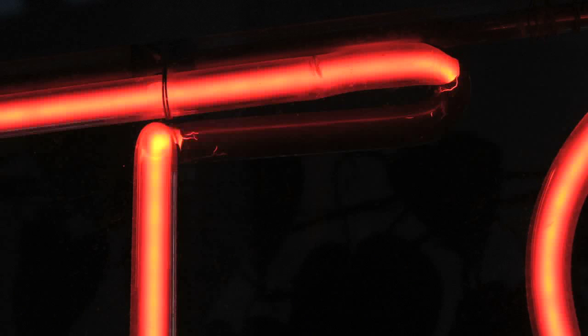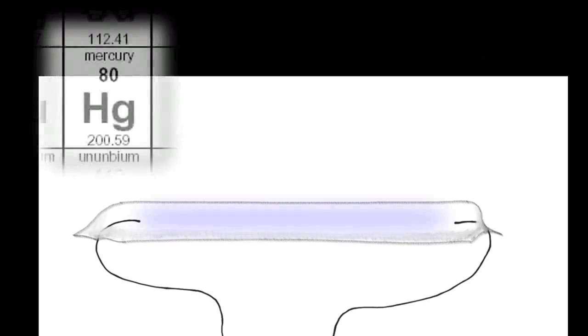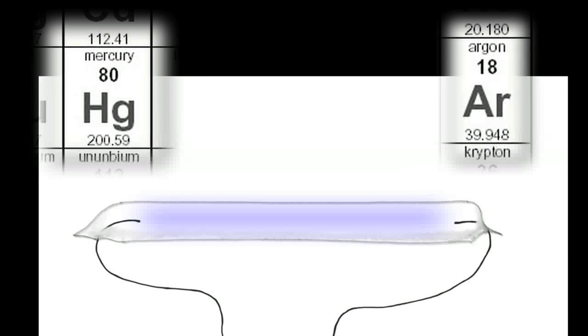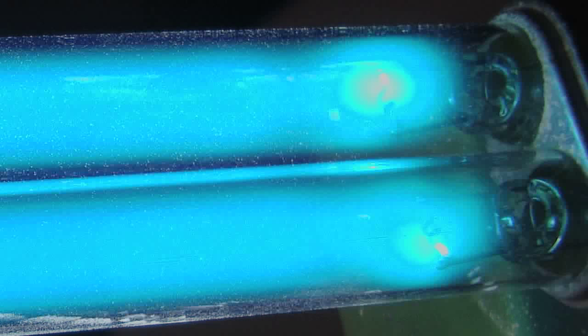If you take the same tube of clear glass and fill it with argon and mercury like what's in a fluorescent lamp, it'll light up blue clear, what's known as clear blue.